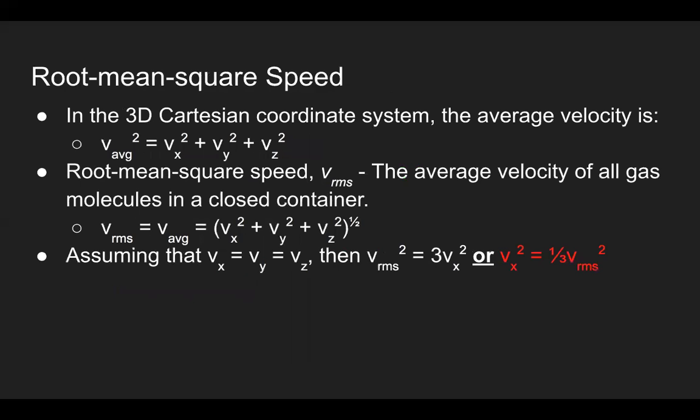In any 3D Cartesian coordinate system, we always have three directions for any vector. To determine the average velocity in this 3D system, we just take the squares of each component in each direction, sum them all together, and take the square root. In this chapter, we are introduced to the root mean square speed, which is basically the average velocity of all gas molecules inside a closed container.